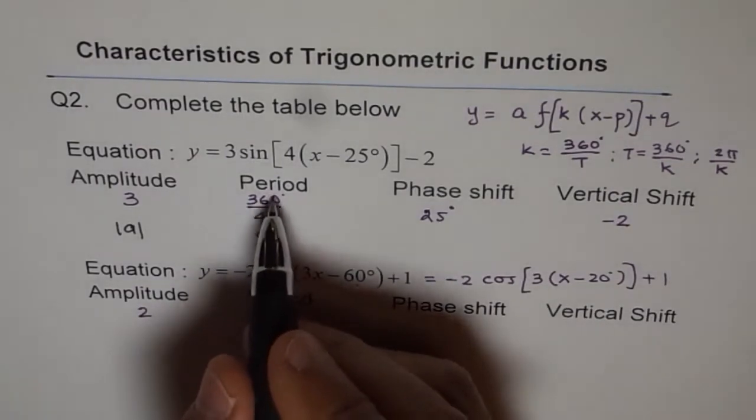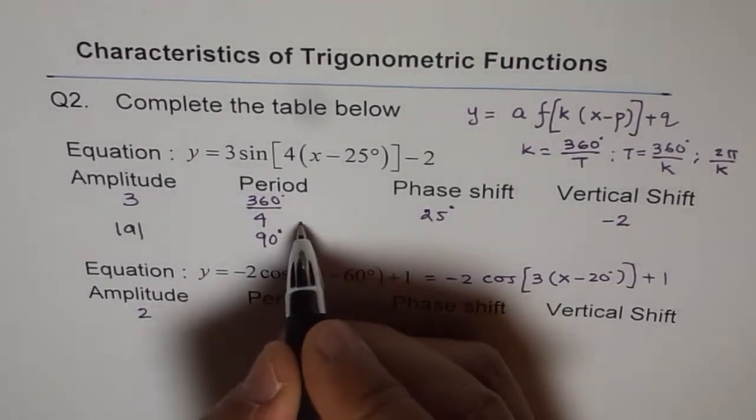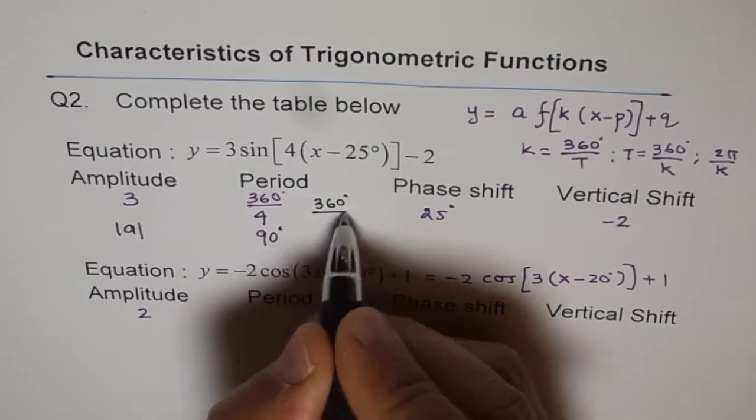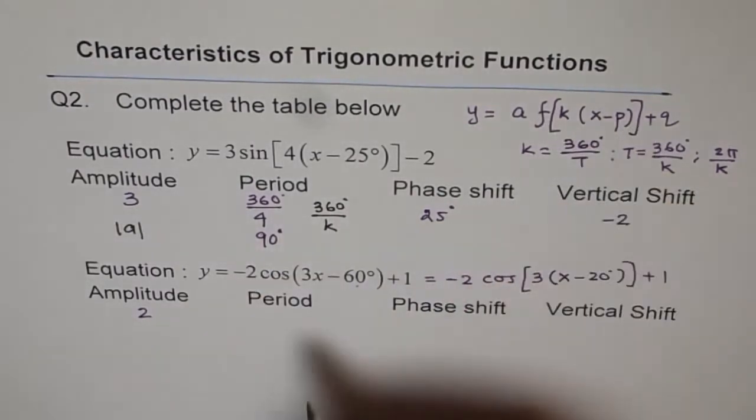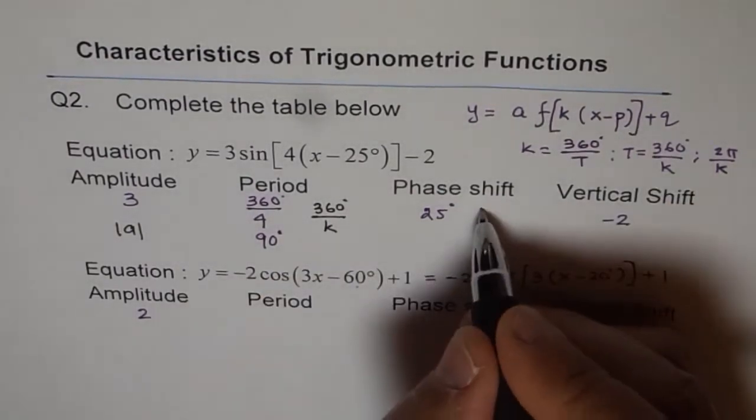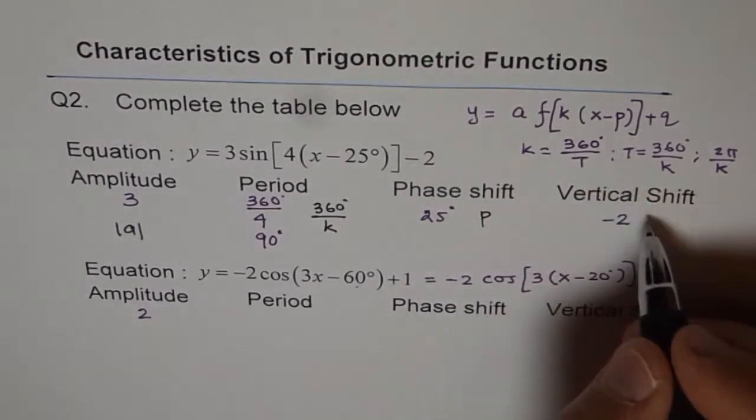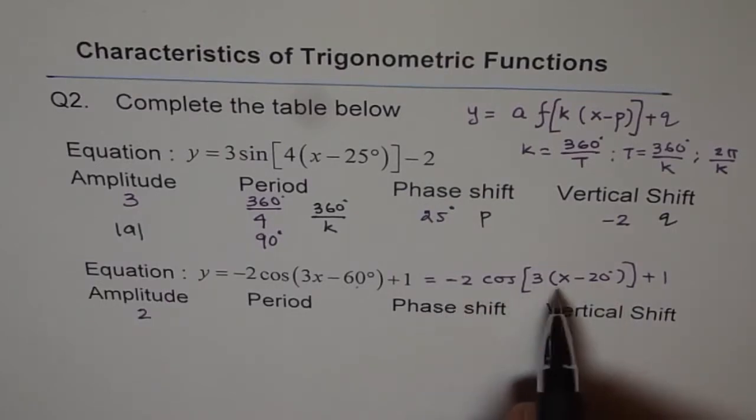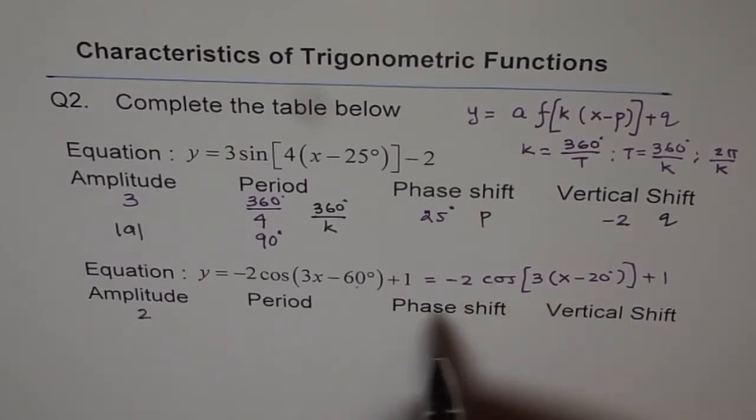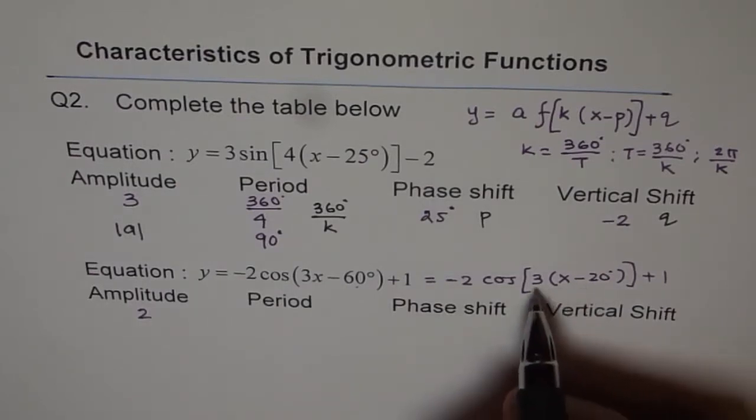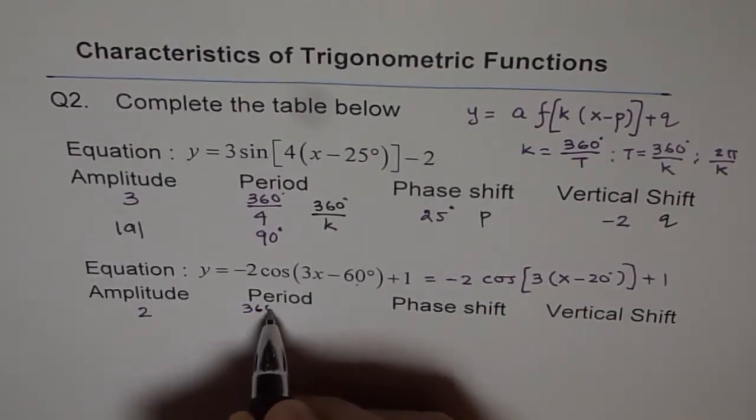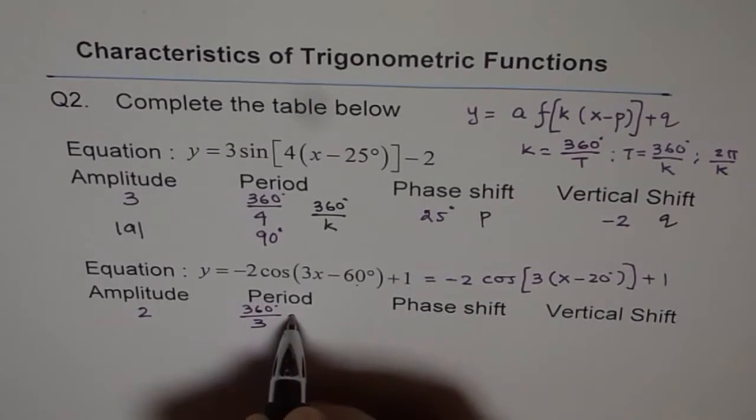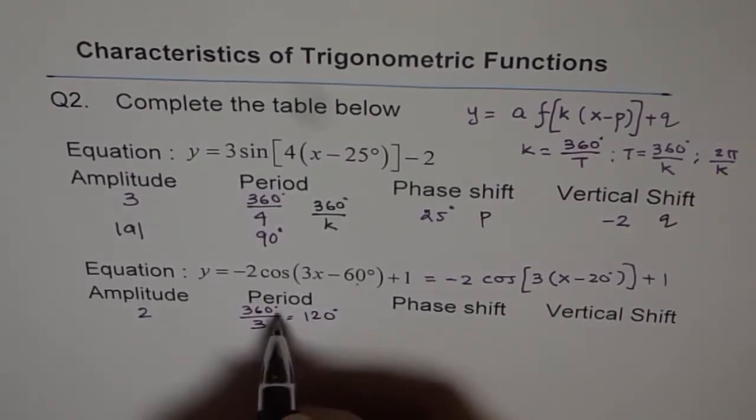And the period for us will be 360 degrees divided by K. If you are comparing with this equation, phase shift is the value P, and the vertical shift is Q. That is what you have to get from the equation. So that is reading our equation and understanding. So time period will be here 360 degrees divided by 3, which is 120 degrees for us.